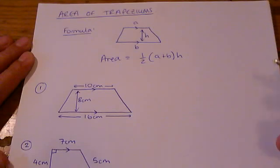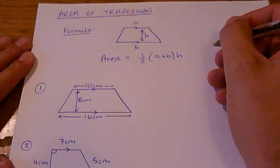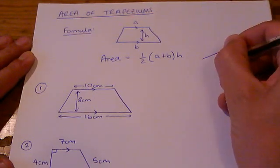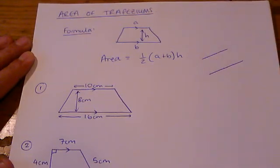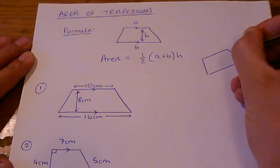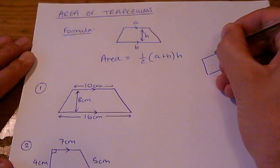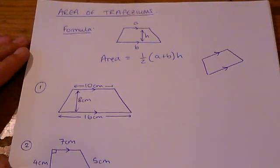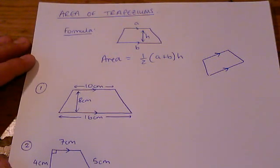First of all you need to be able to recognize a trapezium. A trapezium is a quadrilateral, that's a four-sided shape, and two of the sides are parallel lines. The other two sides don't have to be parallel, but certainly one pair of sides must be parallel in order for it to be a trapezium.